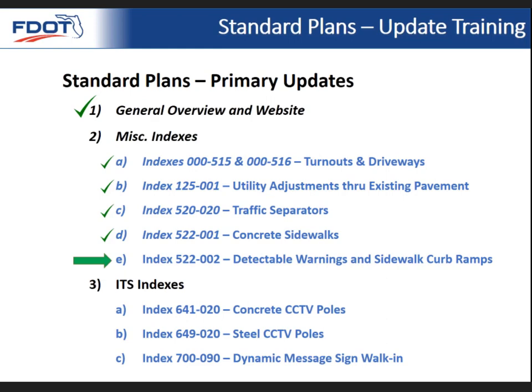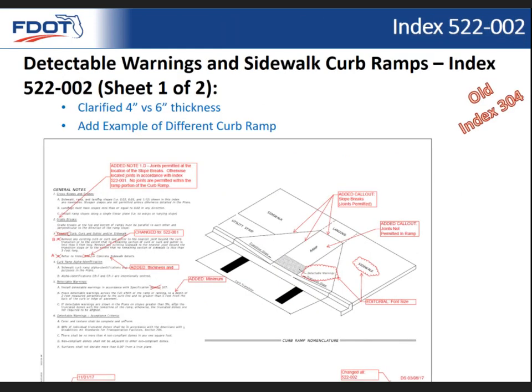For index 522-002, detectable warnings and sidewalk curb ramps — previously index 304 — we wanted better notes handling the change between four-inch and six-inch concrete in reference to the new index 522-001. We also added call-outs pointing to some slope breaks that address the joint issue — these locations within the curb ramp joints would actually be permitted. It's just along the ramp itself that we don't permit joints, so we clarified those two items on this index going forward.